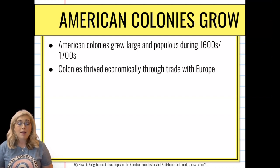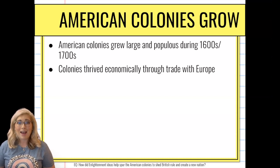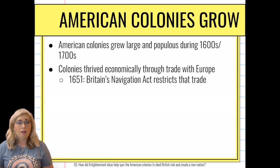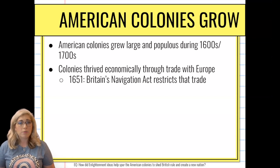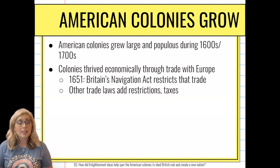The colonies are thriving economically because they're trading extensively with places throughout Europe. They're bringing in lots of money, and the colonies are very happy. Britain is getting a chunk of it, but Britain starts to realize they want the colonies trading with themselves more than the rest of Europe. So they start to pass some taxes and regulations that limit the colonies' trading patterns. The first one comes in 1651, known as the British Navigation Act, which basically makes it impossible for the colonies to trade with anyone other than Britain.